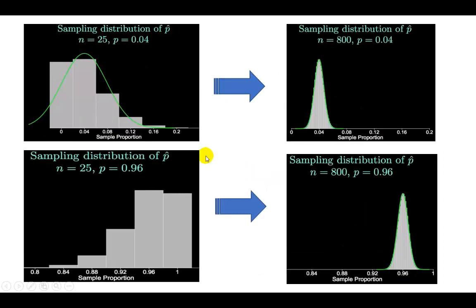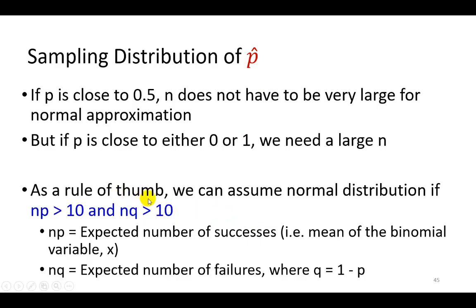Now compare that to this case, the same sample size. Here, population proportion is 0.04, quite close to 0. Here, it's 0.96, quite close to 1. And look over here, they look nothing close to the normal curve. We would need to kick up the sample size quite a bit, as I show here. 800 for this guy, and 800 for this guy, to begin to enjoy the beauty of the normal distribution. So, in general, as a rule of thumb, we can assume normal distribution if np, as well as n times q, are both greater than 10. Bear in mind that np is the expected number of successes, which is the mean of the binomial variable x, and nq is the expected number of failures, where q is 1 minus p.